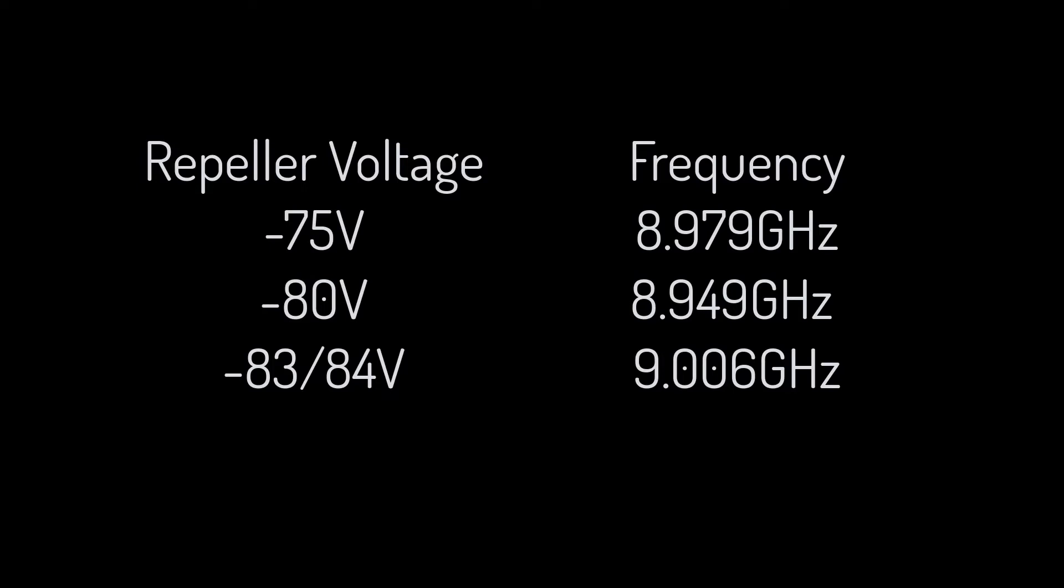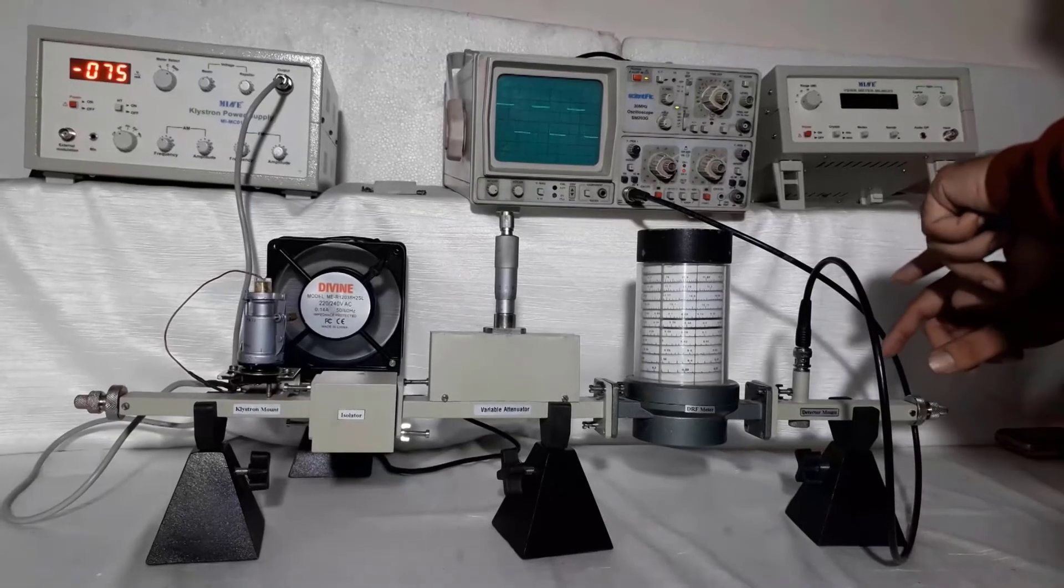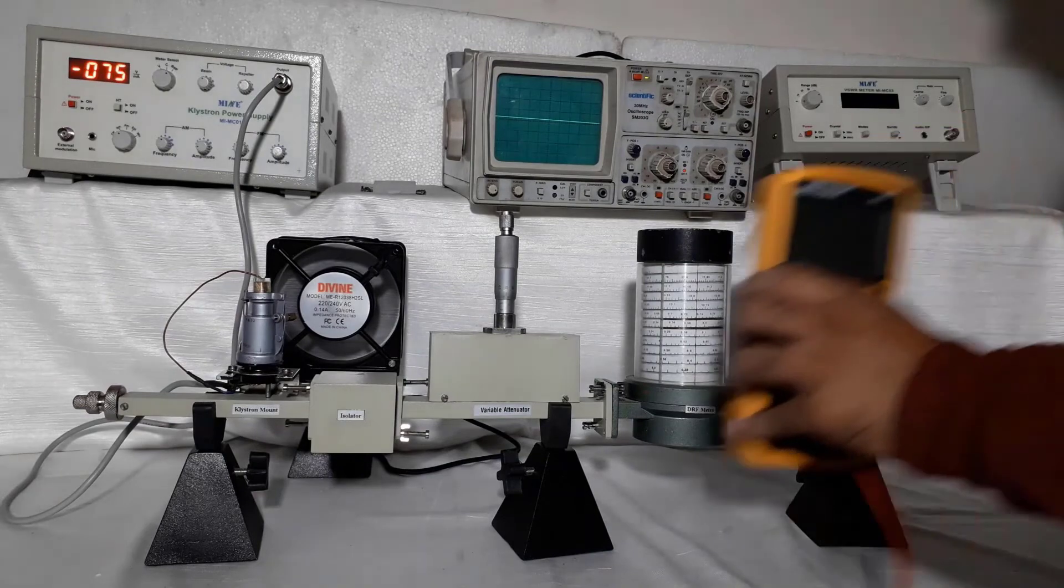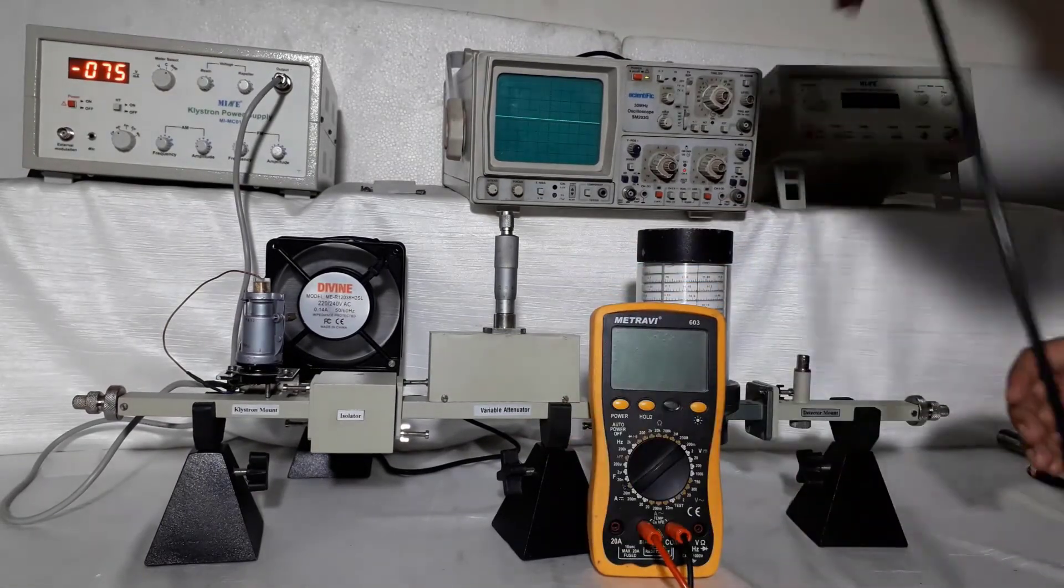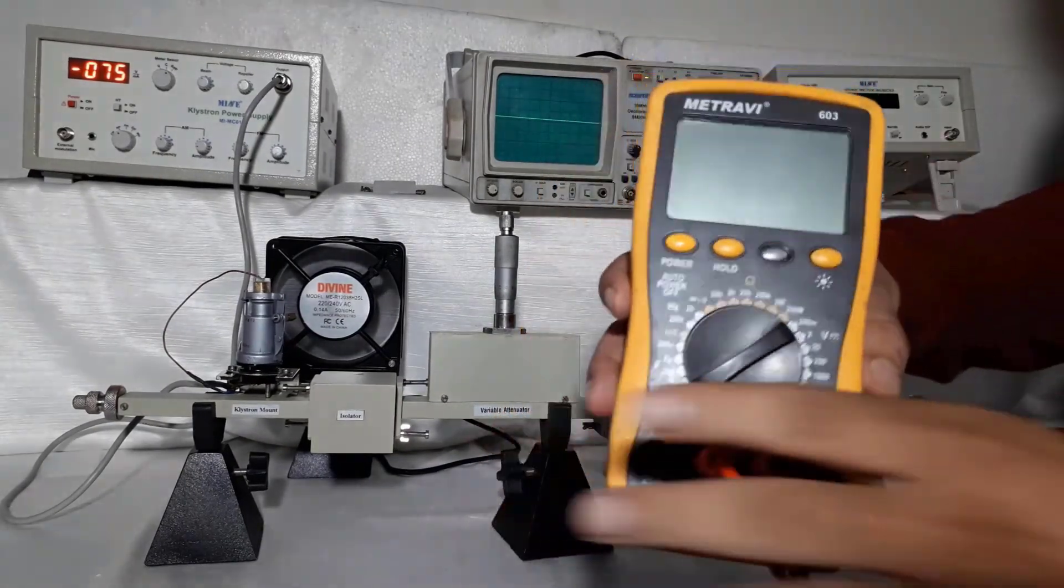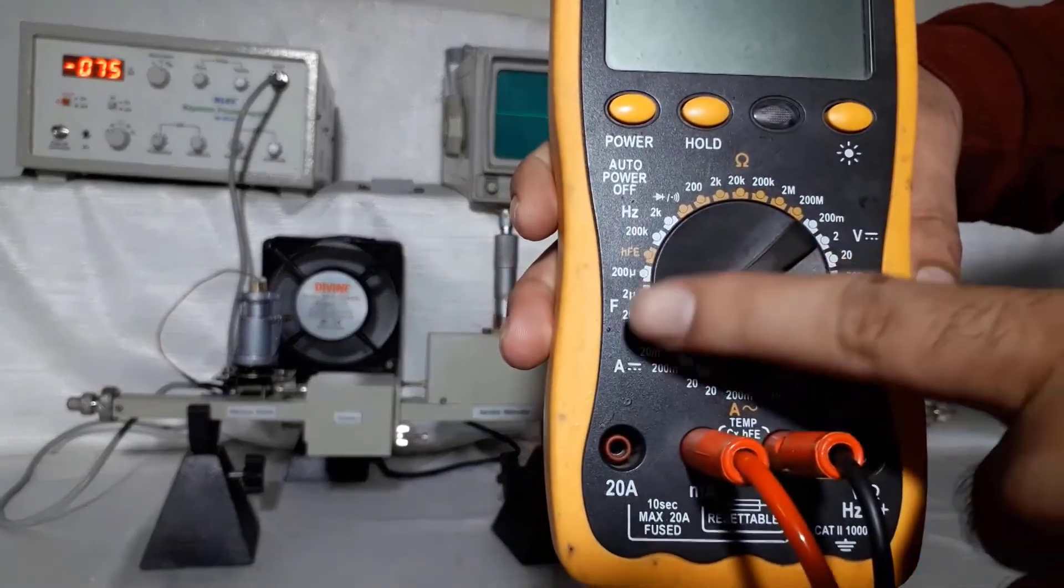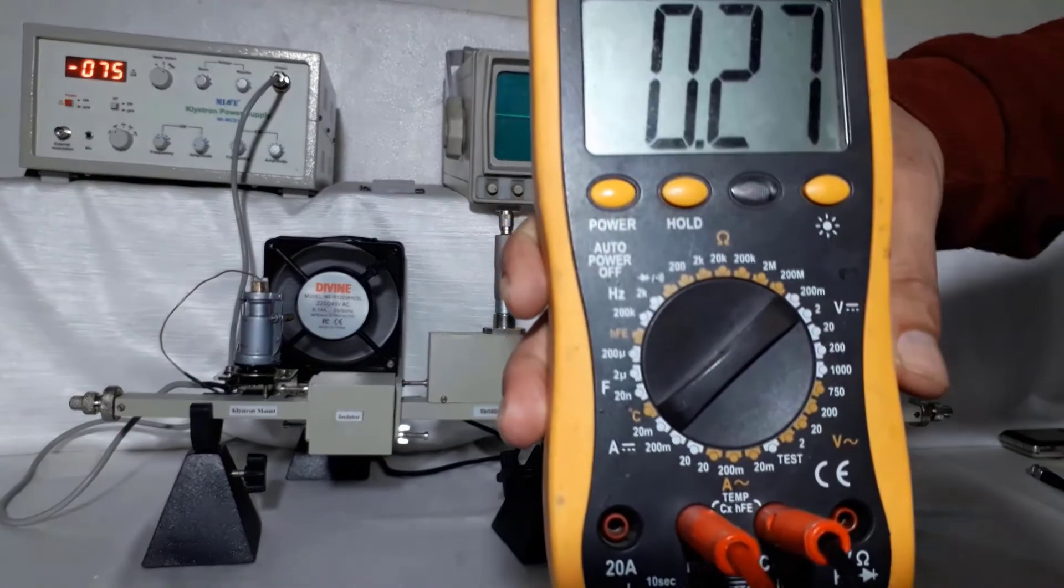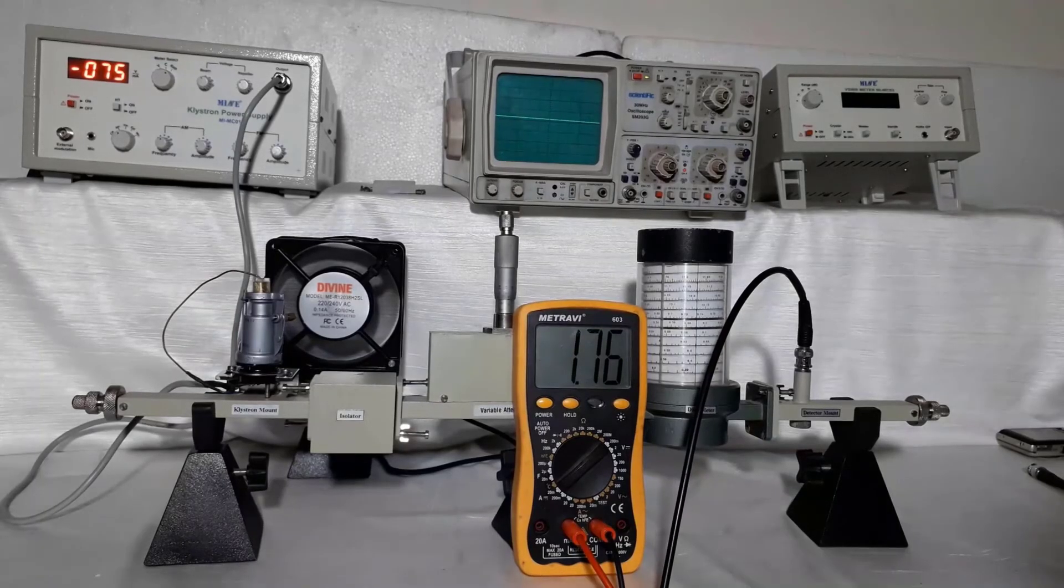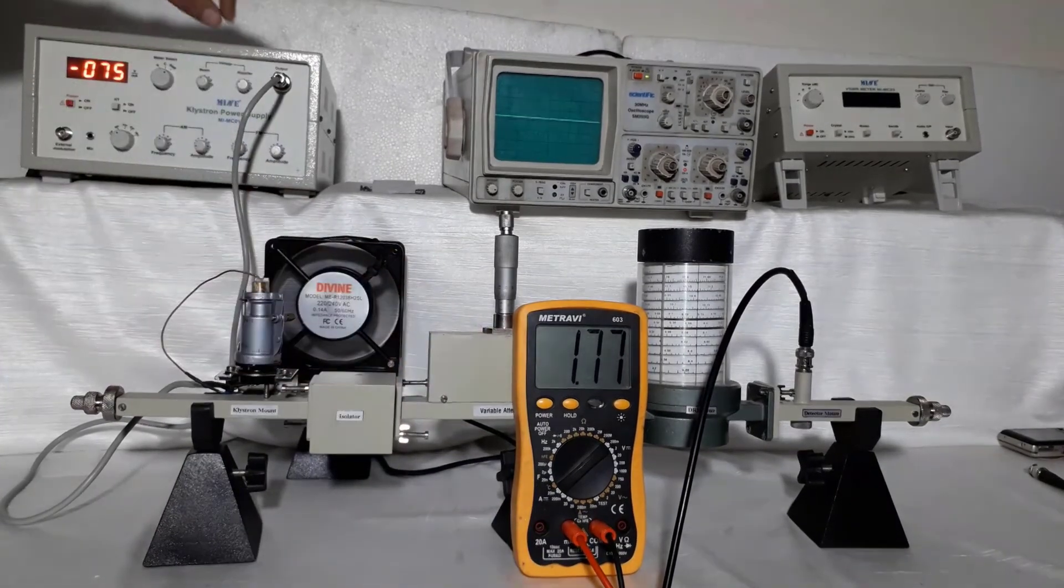Finally, we have three values of repeller voltages and frequencies. Now remove CRO and connect millimeter at detector mount. Now measure current at all three positions of repeller voltage and note down its values.